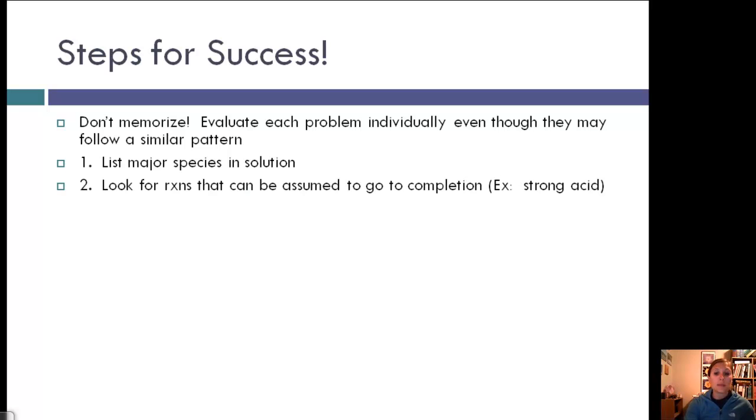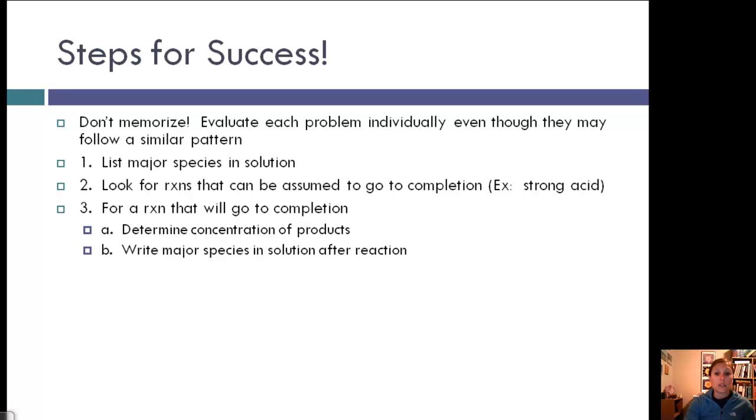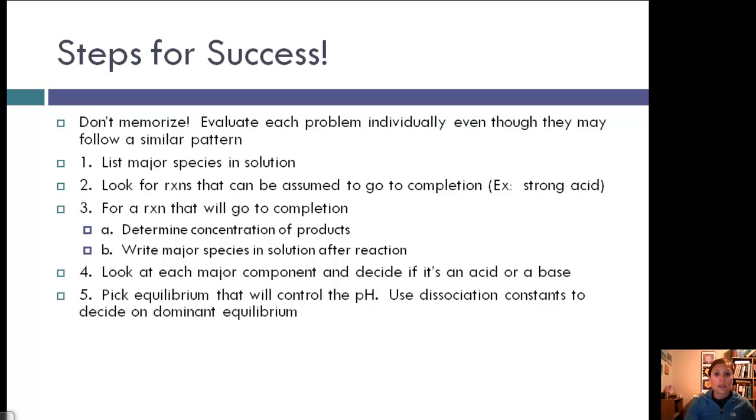Look for reactions that go to completion - strong acids and bases completely dissociate. For these reactions, determine product concentrations and write major species after reaction. Then look at each major component and decide if it's an acid or base. Pick the equilibrium that controls pH - which is dominant? Use dissociation constants to decide on the dominant equilibrium.